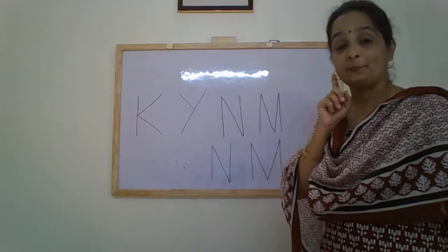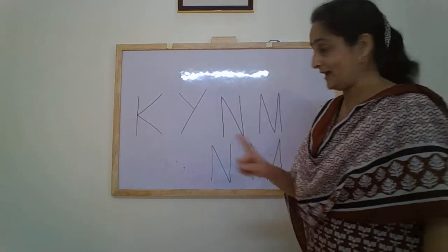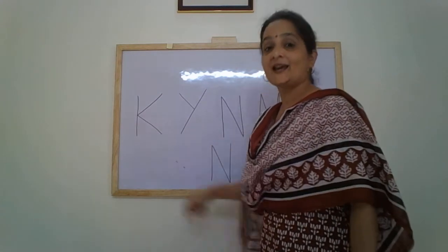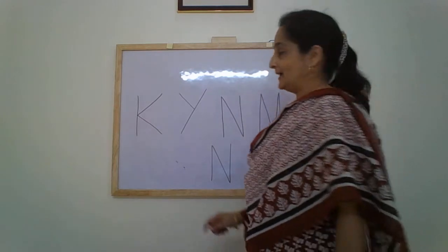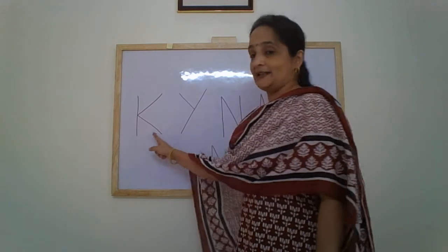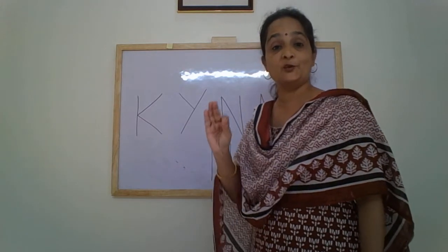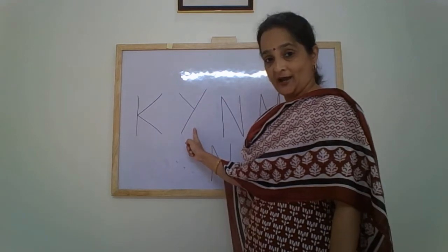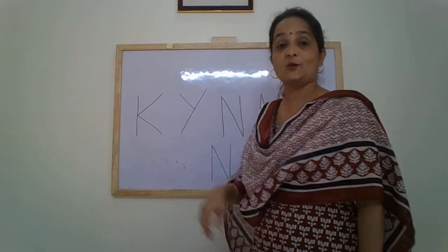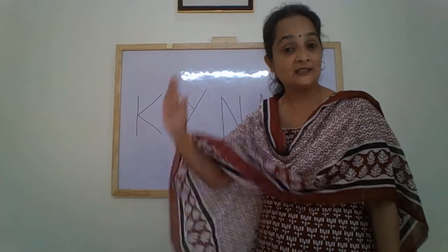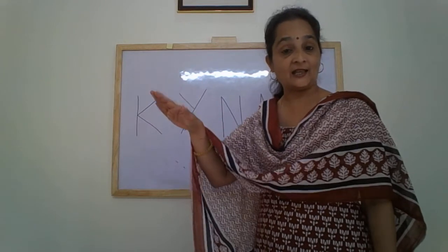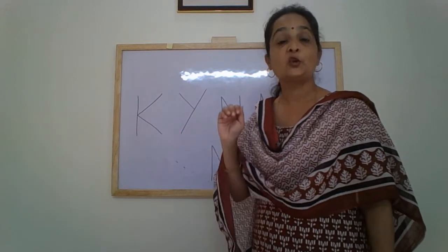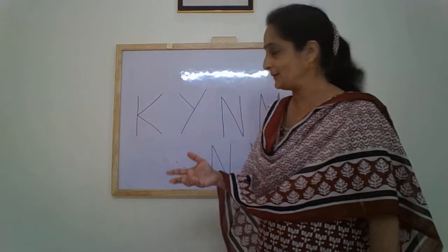So children, practice them. Letter K, sound is K, as in kite, kangaroo, kettle, king. Letter Y, sound is Y, as in yellow, yacht, yuck.